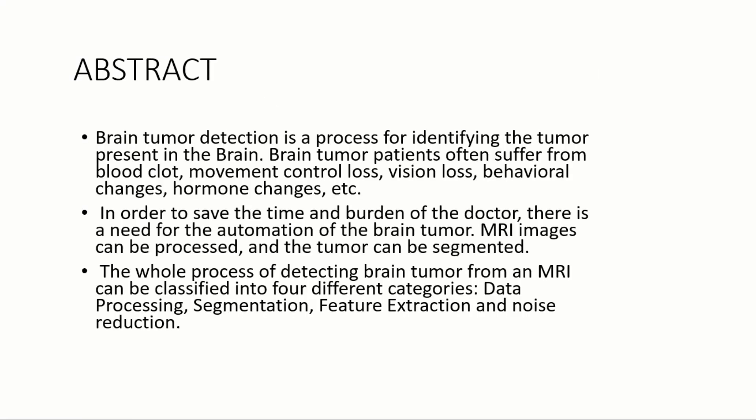Here comes the abstract. Brain tumor detection is a process for identifying the tumor present in the brain. Brain tumor patients often suffer from blood loss, movement control loss, vision loss, and even hormone changes. In order to save the time and burden of the doctor, there is a need for automation of brain tumor detection. By using MRA scan images, it can be processed and the tumor can be detected. The whole process can be classified into four different categories: data processing, segmentation, feature extraction, and noise reduction.